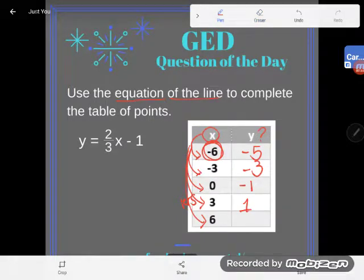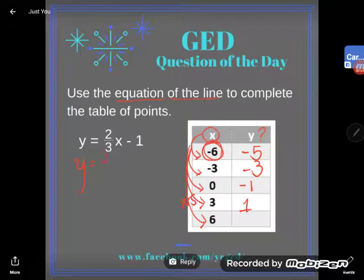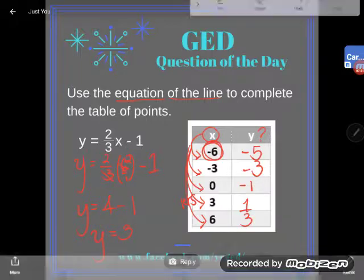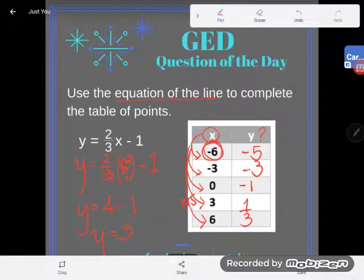But let's plug in now six. So if I take 2/3 of six that'll give me four, so y is equal to four minus one. And of course four minus one is just three, so I get three. So I completed the table of points, I filled it in, I'm done.